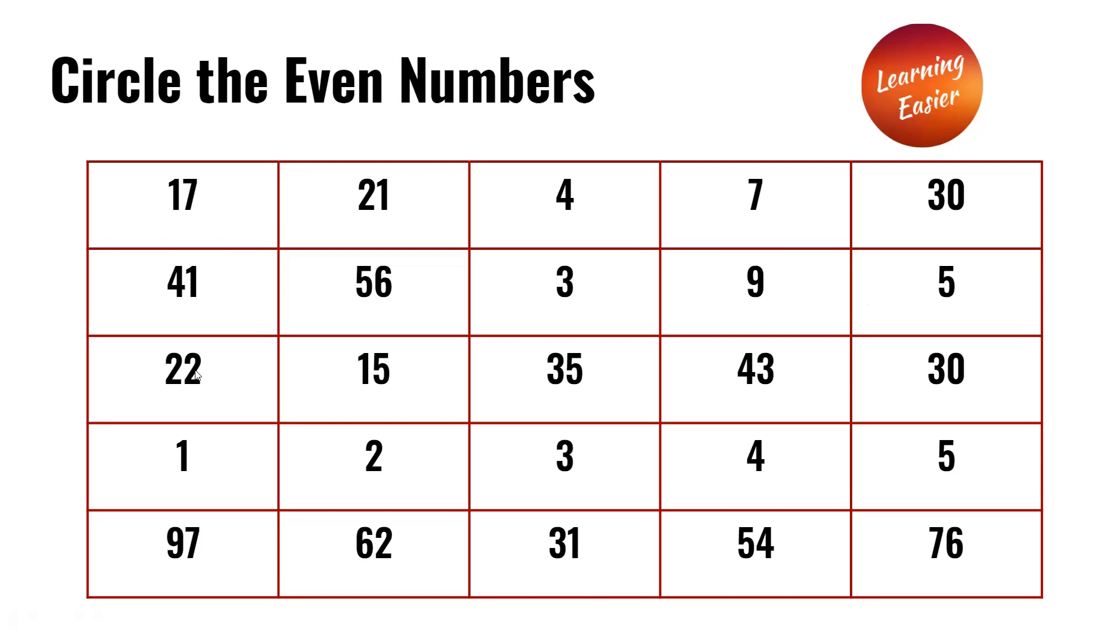In the third row we have 22, 15, 35, 43, and 30. The even numbers here are 22 and 30.